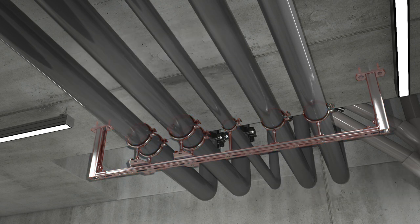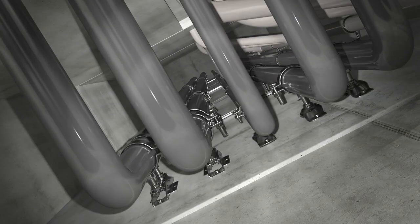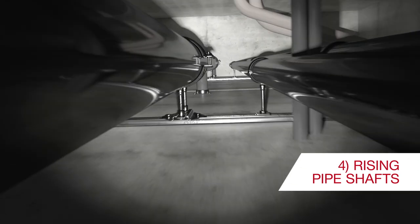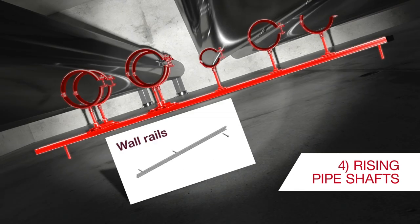In the fourth phase, pipes go up through the building in a rising shaft. Here, the weight of the pipes is supported by fixed points. Common pipe supports in the shaft are usually wall rails.